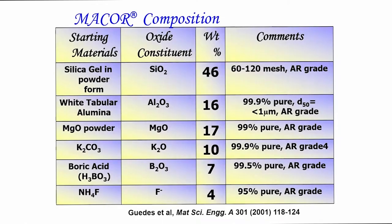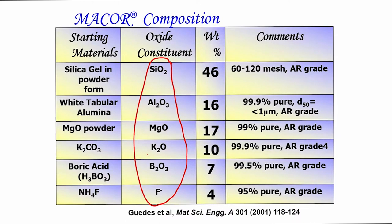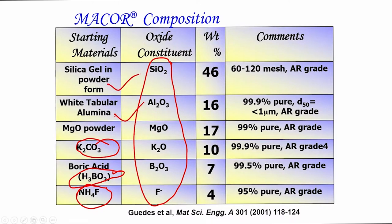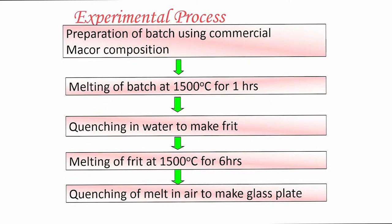In order to develop dental restorative crown materials, I will now show results from developing mica-based glass ceramics — that is, machinable glass ceramics. The typical composition includes silica-based oxide glasses with alumina, magnesium oxide, K₂O, B₂O₃, and fluorine. We used NH₄F as a fluorine precursor, H₃BO₃ as a B₂O₃ precursor, K₂CO₃, white tabular alumina, and silica gel in powder form. The manufacturing protocol involves mixing the batch, melting at 1500°C for 1 hour in a platinum crucible, and then quenching into water to make a frit.